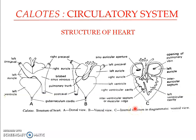In Calotes there is double circulation. Deoxygenated blood is carried through the sinus venosus and enters the right auricle, while simultaneously oxygenated blood enters the left auricle through the pulmonary vein. From the left auricle, blood moves into the cavum dorsale of the ventricle through the auricular ventricular aperture. At the same time, from the right auricle, blood flows through the auriculo-ventricular aperture into the cavum pulmonale of the ventricle.